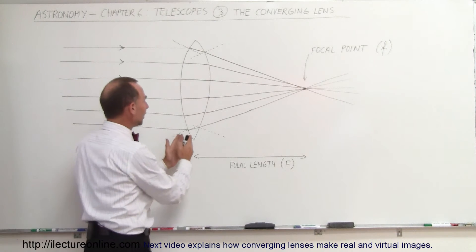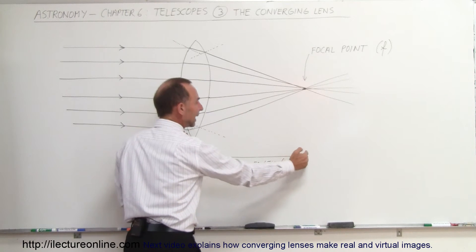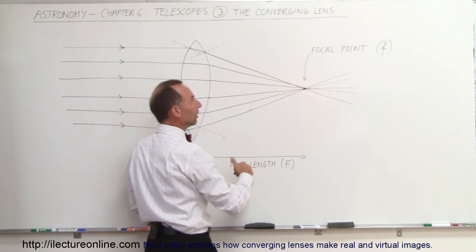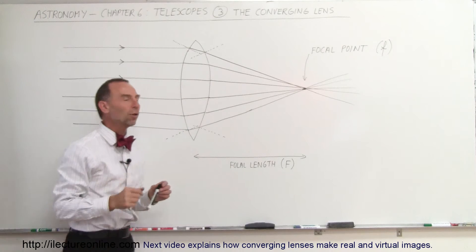The distance from the lens to the focal point is called the focal length. We typically use the capital F to indicate the distance to the focal point, called the focal length, and the focal point itself is usually denoted with a small f.